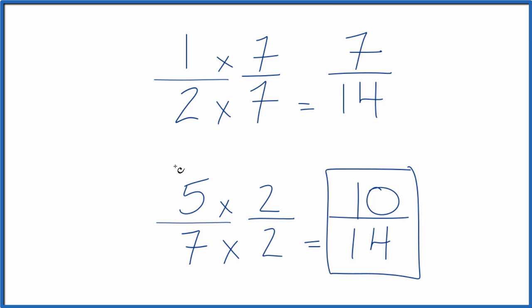Likewise, that means 5 sevenths is going to be greater than 1 half. So, in answer to our question, when we compare 1 half and 5 sevenths, the greater fraction is 5 sevenths. This is Dr. B, and thanks for watching.